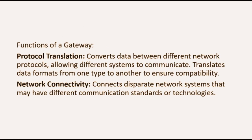The first function of a Gateway is Protocol Translation, wherein it converts data between different network protocols allowing different systems to communicate. It also translates data formats from one type to another to ensure compatibility. The second function of Gateway is Network Connectivity, wherein it connects disparate network systems that may have different communication standards or technologies.